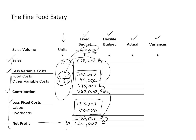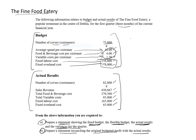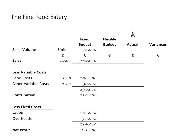So I'm just going to tidy this up a little bit — and that is the fixed budget done. The next thing I'm going to do is pop in the actual results. Going back to the question, I can see the actual information. First thing to note is that there were actually 82,000 people, so I'll put that in — 82,000 customers.